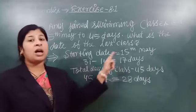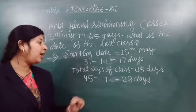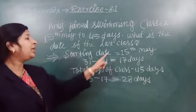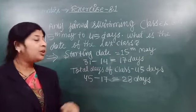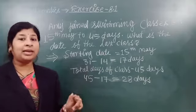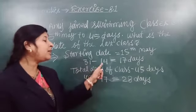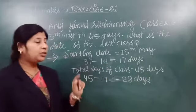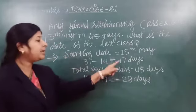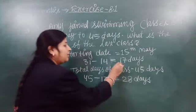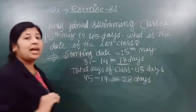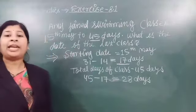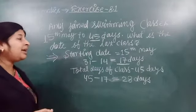We will not count the 15th. We will count only up to 14th, because 15th was his first day of class. So we cannot count 15. So 31 minus 14 equals 17 days. So how many days did he attend class in May? 17 days. But how many days does he need to attend class in total? 45 days.